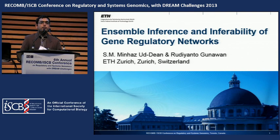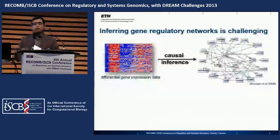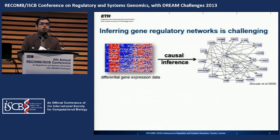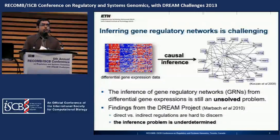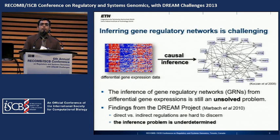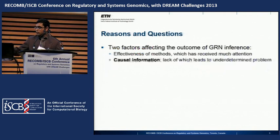My talk is about inference of gene regulatory networks. Gene regulatory networks describe the causal relationships among a set of genes of interest. The inference of causal relationships from differential gene expression data is known to be challenging and still an unsolved problem. Previous gene challenges on this topic have shown that distinguishing between direct and indirect regulation is a major issue for different inference algorithms.